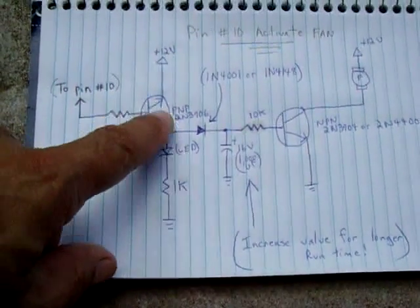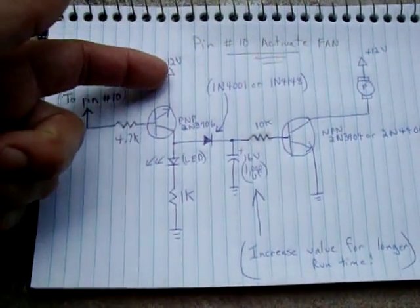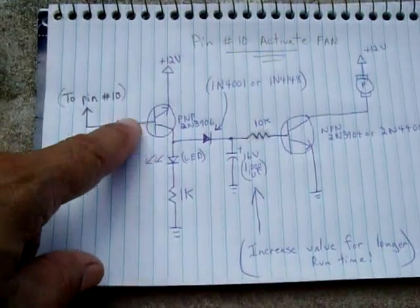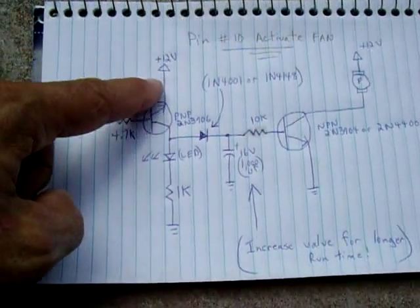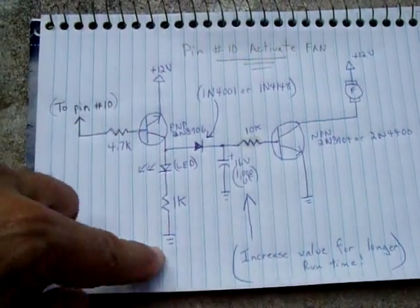The PNP transistor turns on when the base goes to ground. So you have 12 volts flowing into the emitter. Once pin 10 activates, the base is grounded, allowing current to flow through the emitter and out of the collector towards ground.